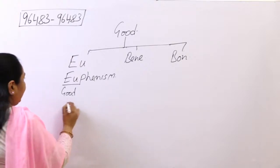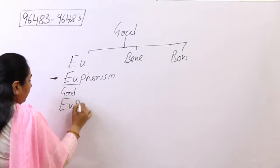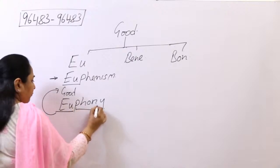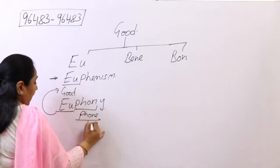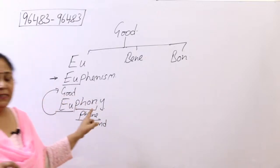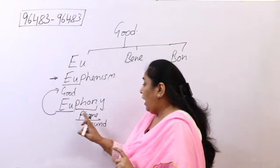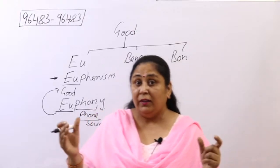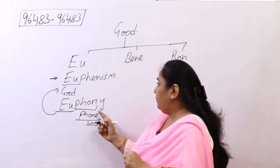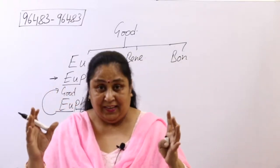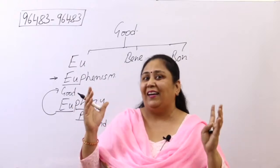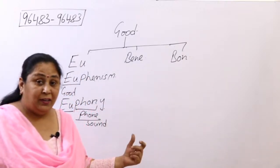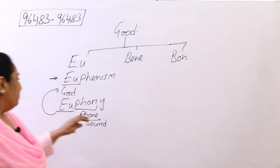The second word from 'eu' is euphony. Eu means good and phone means sound, so euphony means a pleasant or melodious sound. When you listen to music and it sounds beautiful to your ears, you can say it is euphonious. For example: 'The music was euphonious.' Here -ous is added to form the adjective euphonious.